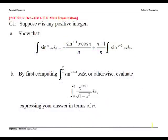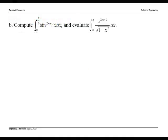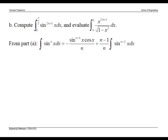Part B gives a hint: find this integral, then find this. From Part A, we have this statement. We replace n by 2n+1.